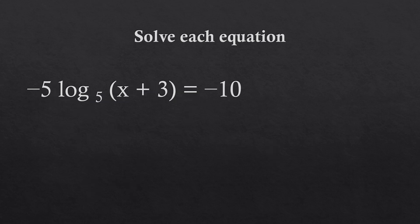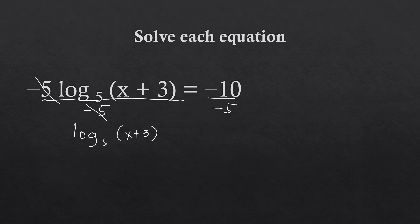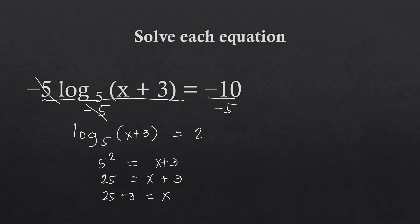Next example: negative 5 times log of x plus 3 to the base of 5 equals negative 10. We divide both sides by negative 5, so log of (x plus 3) to the base of 5 equals 2. We convert to exponential form: 5 squared equals x plus 3. 5 squared is 25, so 25 equals x plus 3. Moving 3 to the other side, x equals 22.